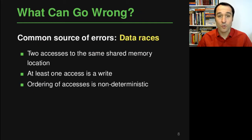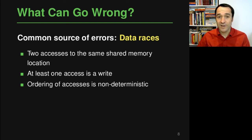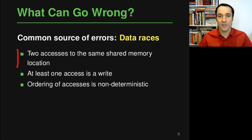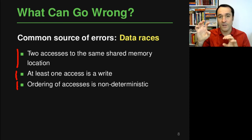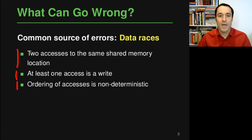In a concurrent program, what could go wrong? The by far most common problem is so-called data races. There are three conditions: first, you have two accesses to the same shared memory location; second, at least one of those accesses is a write; third, the ordering of the accesses is non-deterministic — meaning there may be an execution where access one happens before access two, and another execution where access two happens before access one. When all three conditions hold, the program has a data race.